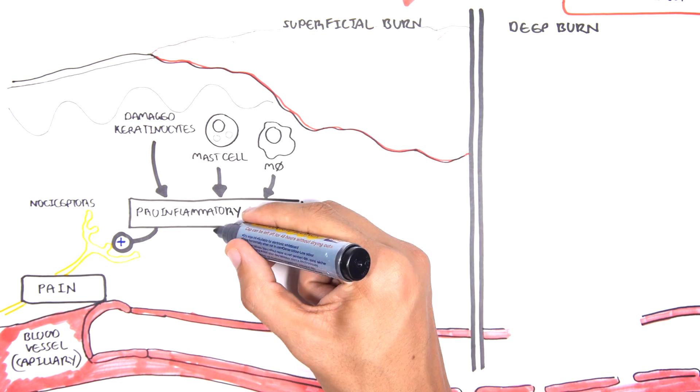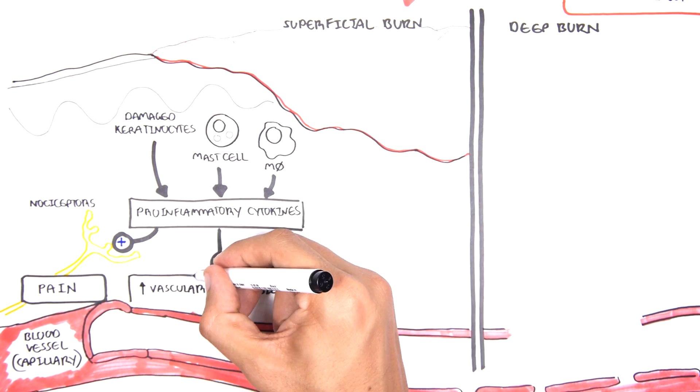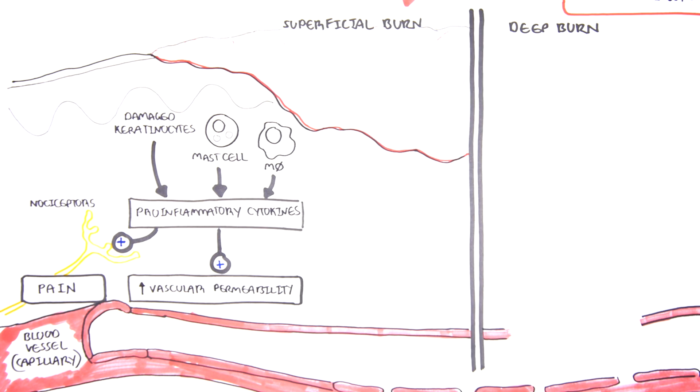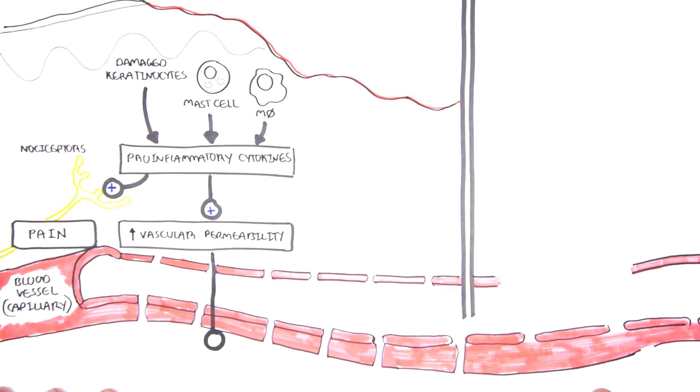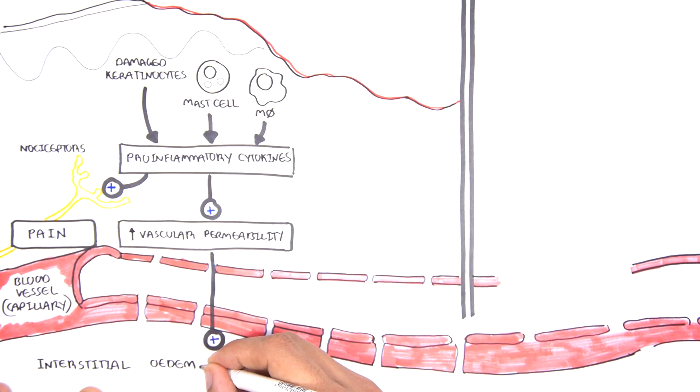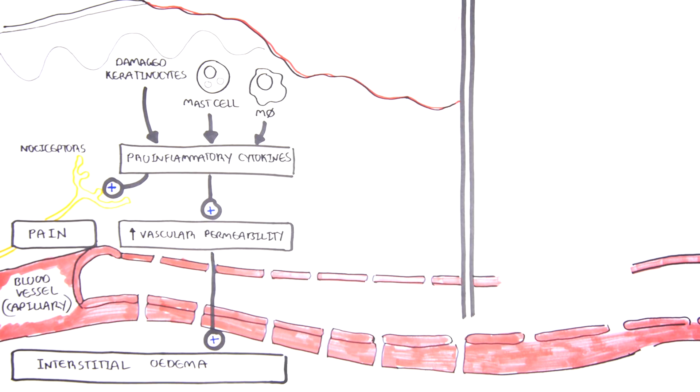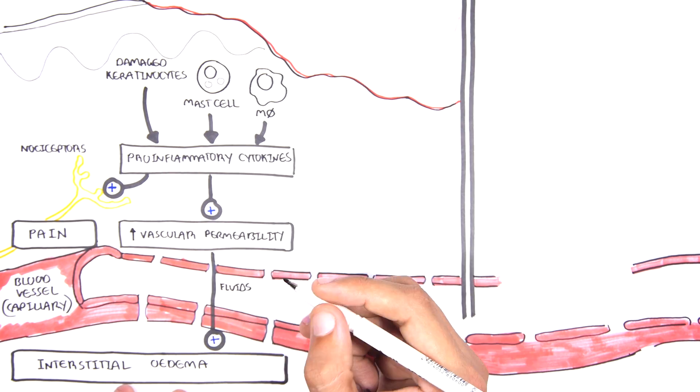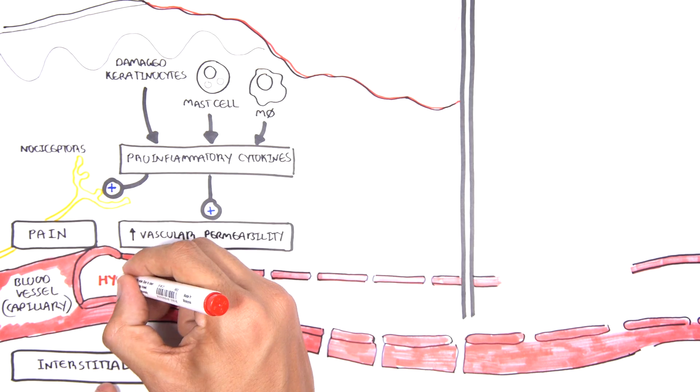Some cytokines will cause increase in vascular permeability. The increase in vascular permeability will cause fluid to leak out and may lead to interstitial edema. As the fluid leaks out, it can result in hypotension.